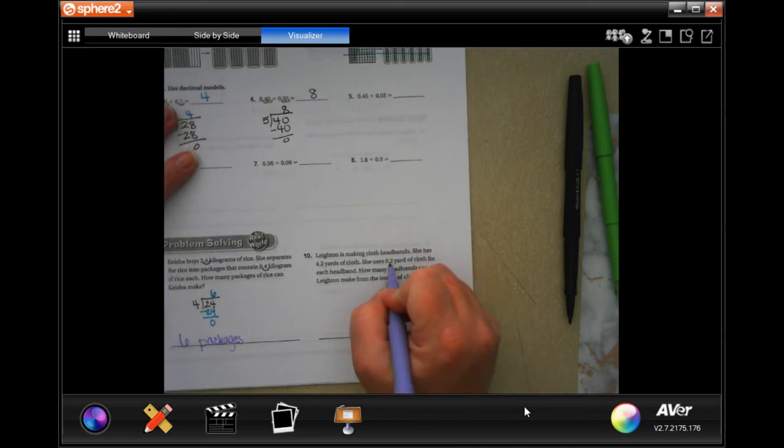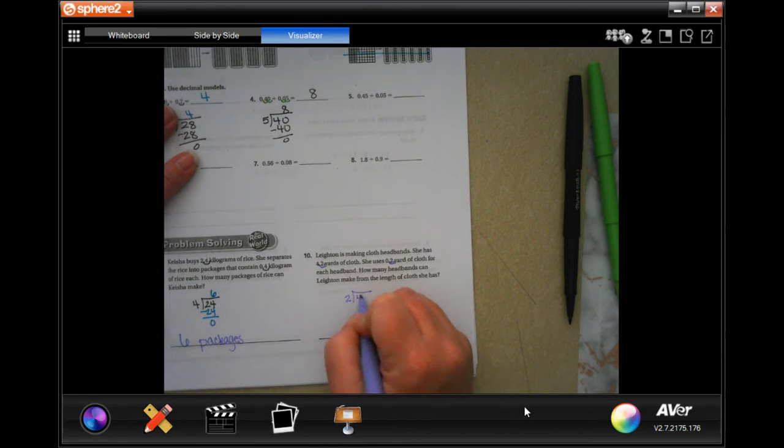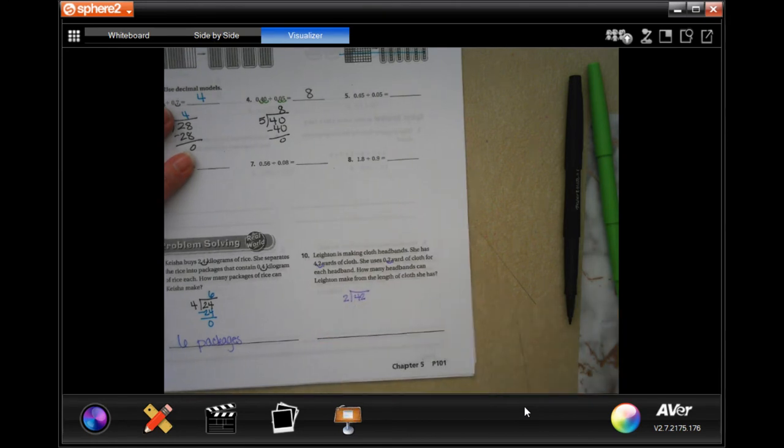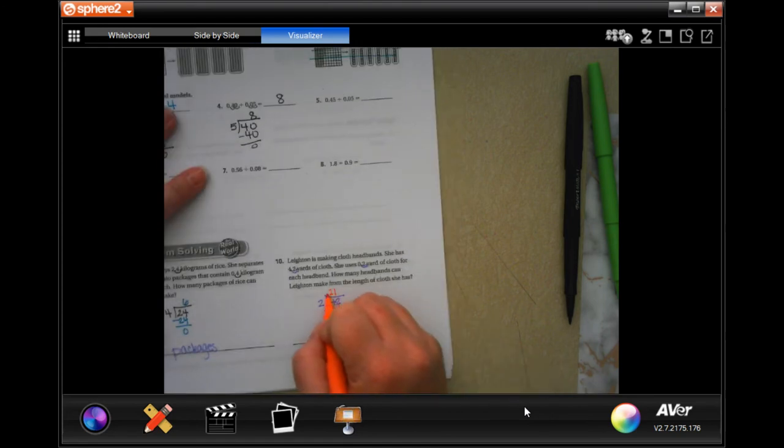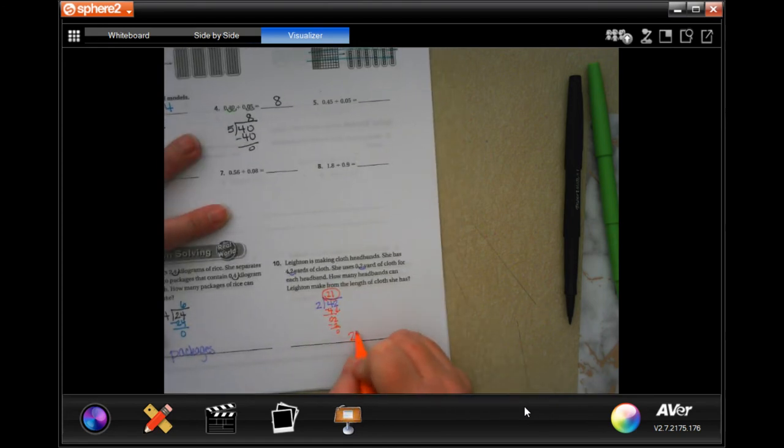Same thing here. Point two, got to move it once, got to move it once. Now I'm going to have 2 into 42. Leaton is making cloth headbands. She has 4.2 yards of cloth. She uses 0.2 yards of cloth for each headband. How many headbands can we make from the length of cloth that she has? So 2 will go into 4 twice, that's 4, subtract, bring down our 2. Two will go into 2 once, that is 2, subtract and get zero. So we're going to be able to make 21 headbands.